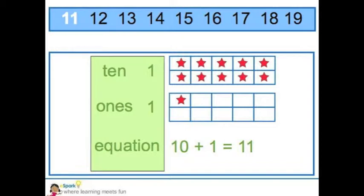We have one group of 10, 1, 1, and that makes 11. If you look at the bottom of the page we can also see the number sentence. 10 plus 1 equals 11.